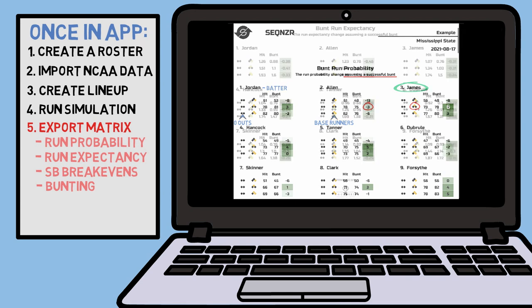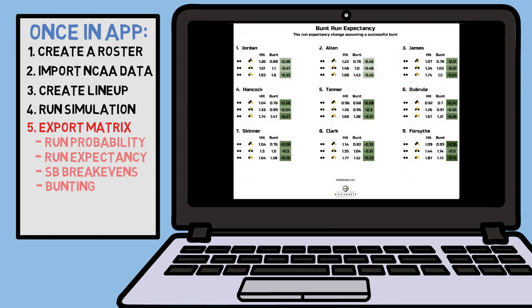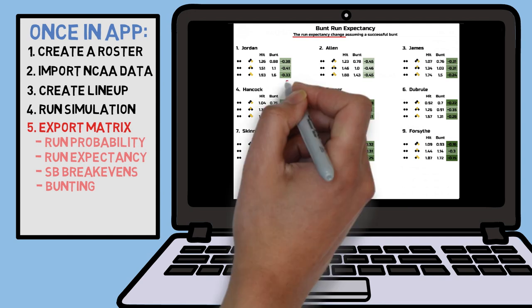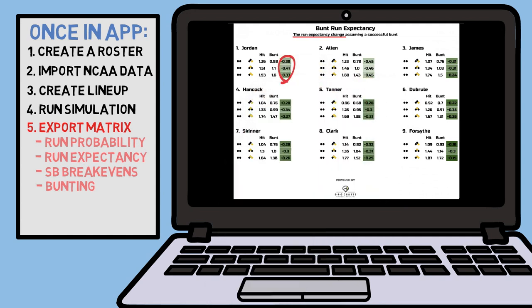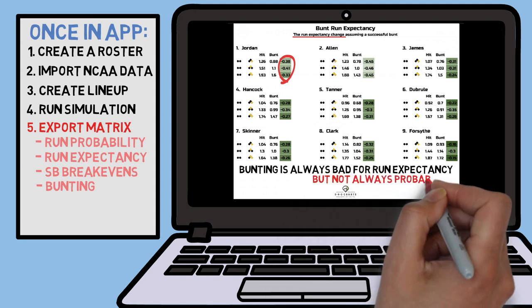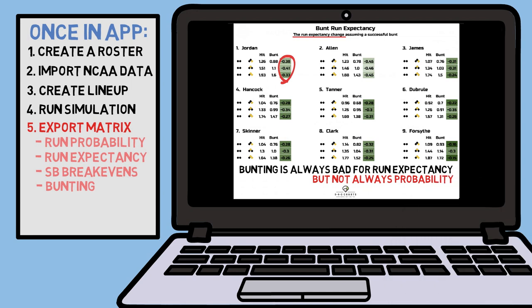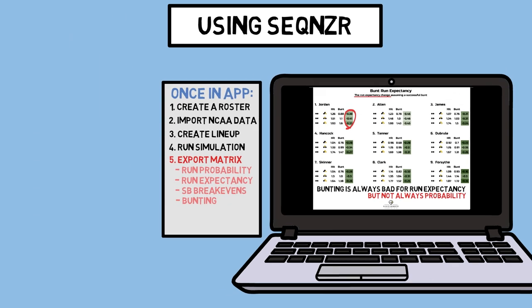If we pop down to the bottom of this sheet, we will see again a new comparison of how a successful bunt would affect the run probability of maximizing your runs each inning by all of your different hitters in your lineup. In terms of maximizing your ability to score runs each inning, bunting will almost always hurt that total, so you should look to avoid it, for the most part, earlier in games. But just because it's bad for run expectancy doesn't mean it's bad for run probability. If you are down one run, you absolutely should bunt with some hitters in your lineup, and this sheet helps show you how a successful bunt will affect the total projected runs for that inning.